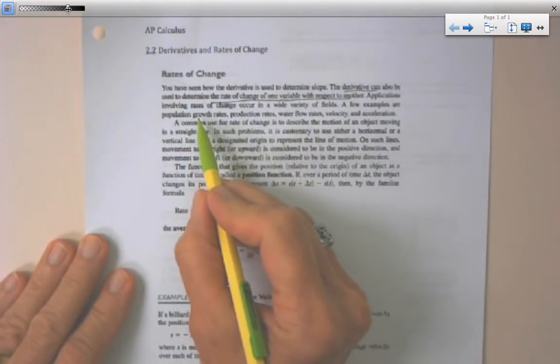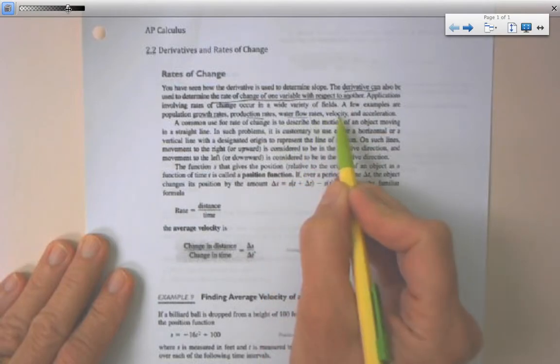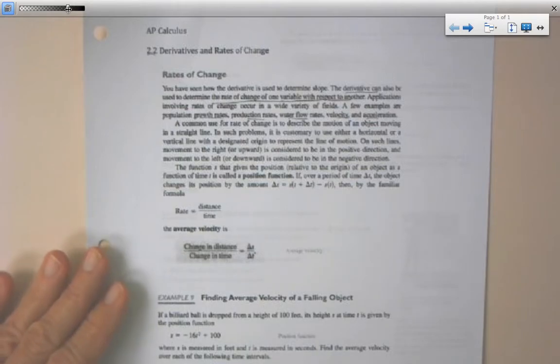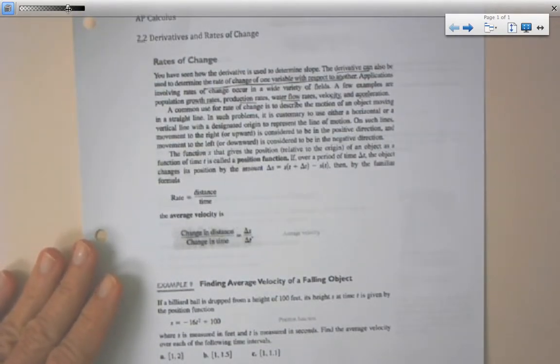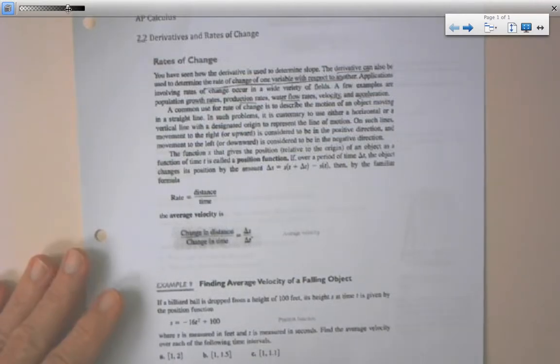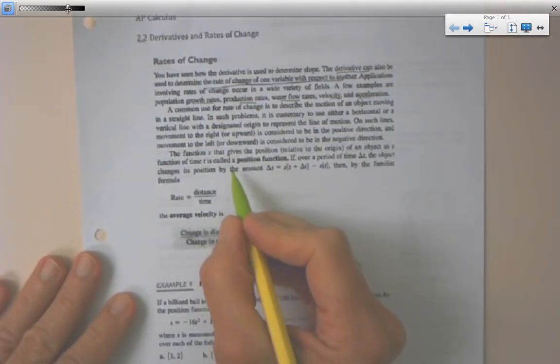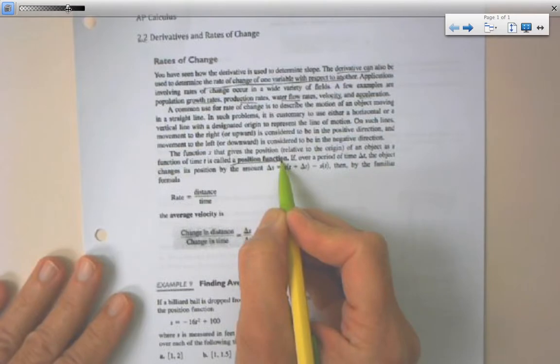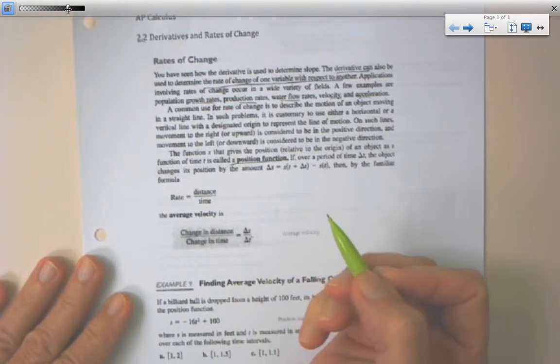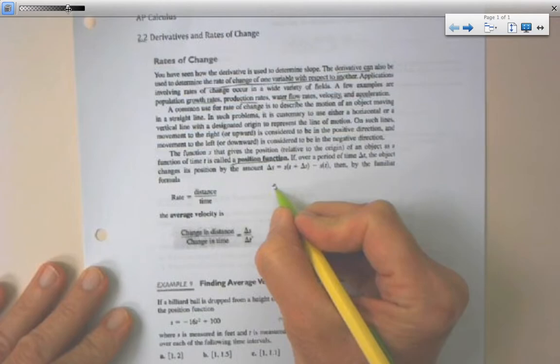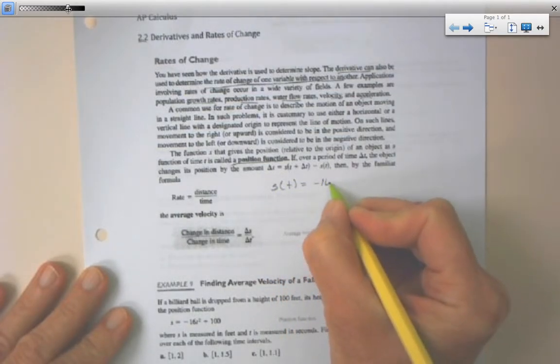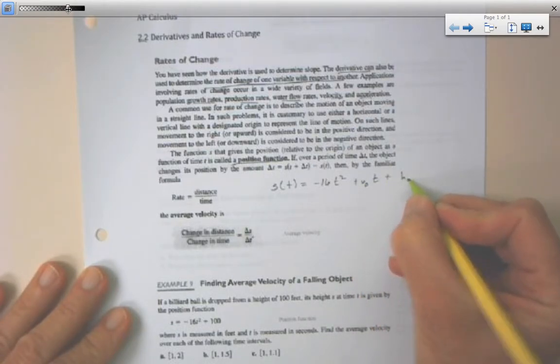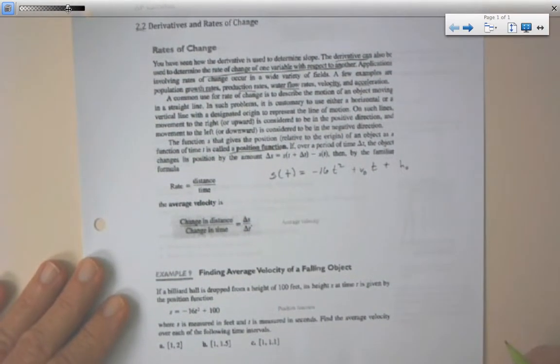Some of our applications we're looking at are growth rates, production, water flow, velocity, and acceleration. It's one of the most common ways to describe how an object changes in terms of velocity over time. Usually to describe that type of change, we start with something called the position function. The position function is something in the form of negative 16t squared plus initial velocity at time t plus initial height above the ground.